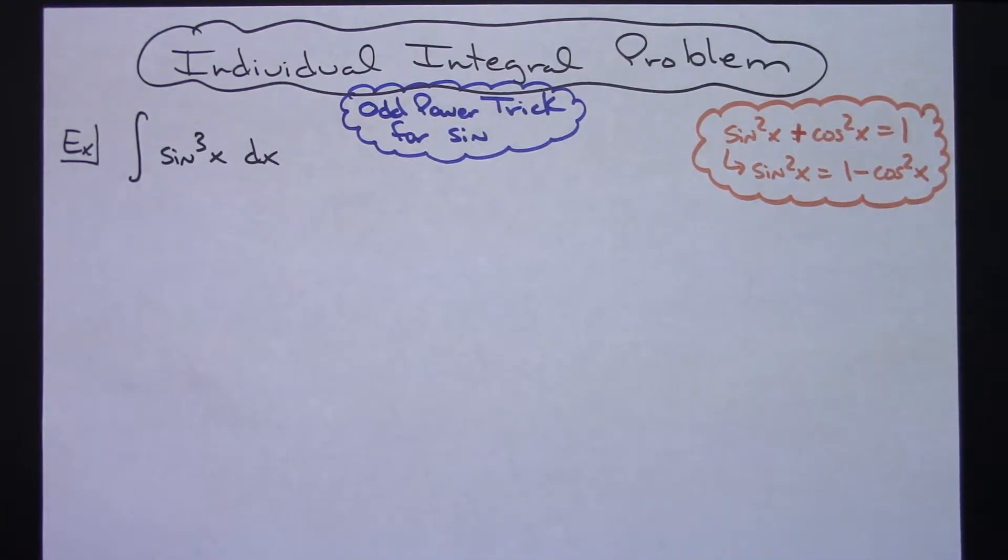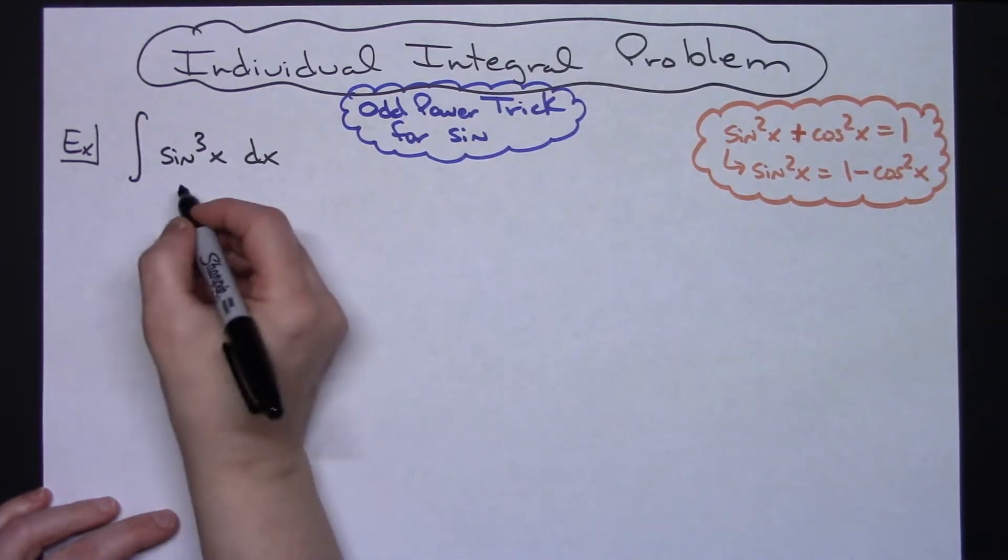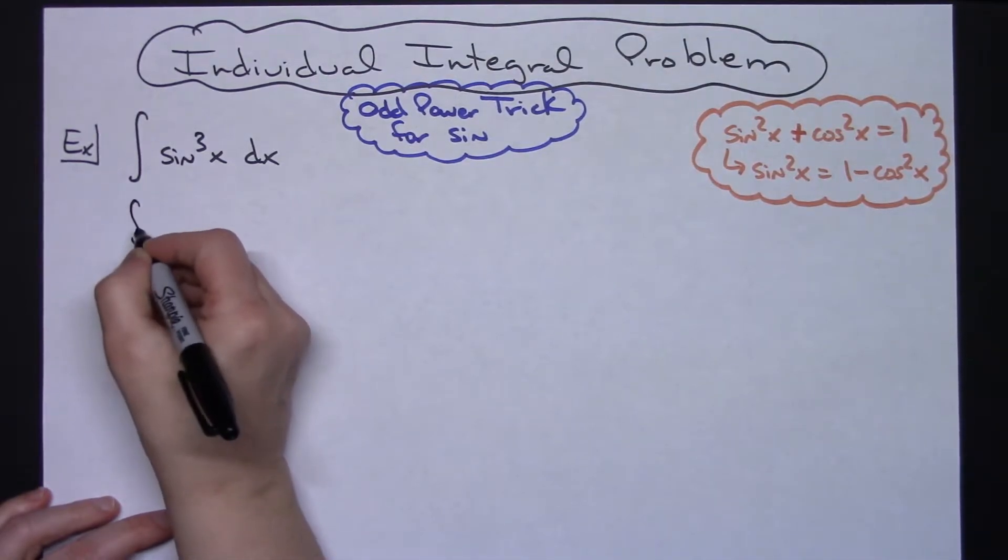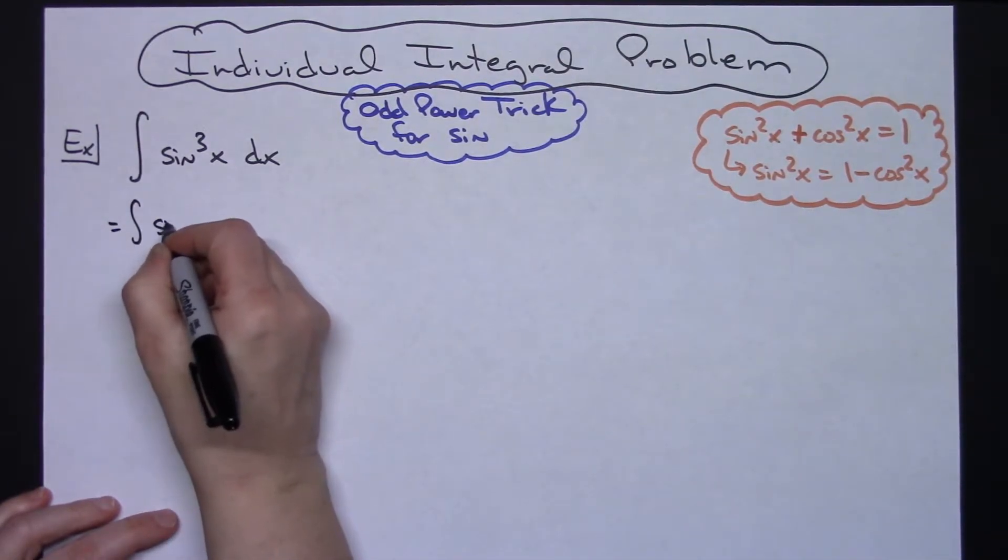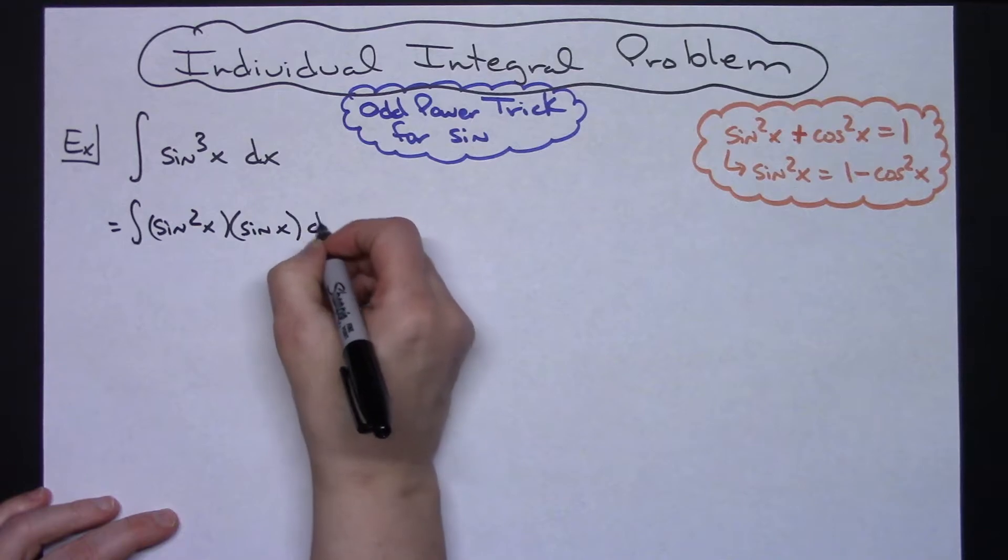So this would be the integral of sine x to the third power dx. I'm going to choose to break this up into the integral of sine squared x times sine x dx.